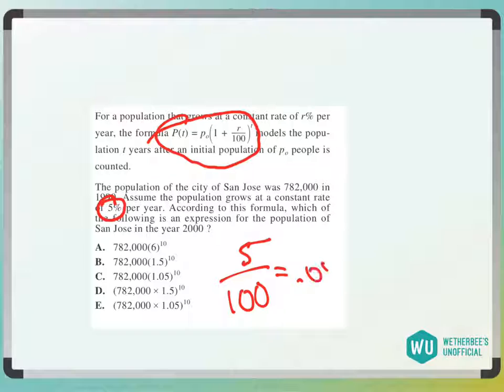equals 0.05, so we know it's going to be 0.05. So that makes A gone, that makes B gone, that makes D gone.